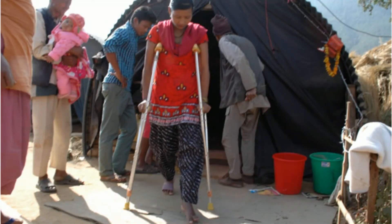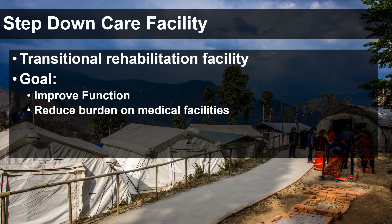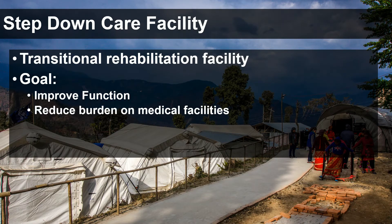So what happens to patients like Bimala? Where can they go before the health system is strengthened enough to take care of them? One strategy is the development of a step-down care facility. A step-down facility is a transitional rehabilitation facility with two main goals: improve function for the patient and reduce burden on the medical facility. It's useful not only in this type of setting but also in any area where people need ongoing treatment after they leave the hospital and before they go home — in low resource settings, high resource settings, across a wide variety of locations.